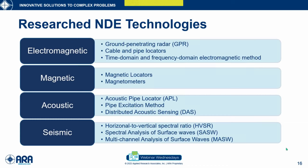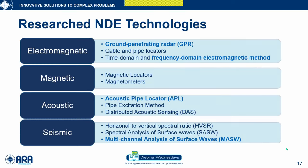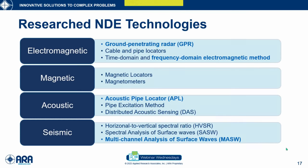While polling DOT offices, we began an in-depth literature search on current and emerging NDE technologies, which breaks into four major categories: electromagnetic, magnetic, acoustic, and seismic. Today I'm going to focus on the most promising technologies that we were able to test in lab and field settings: ground penetrating radar, frequency domain electromagnetic method, acoustic pipe locator, and multi-channel analysis of surface waves. I'll go through these four methods in detail and describe their physical principles.